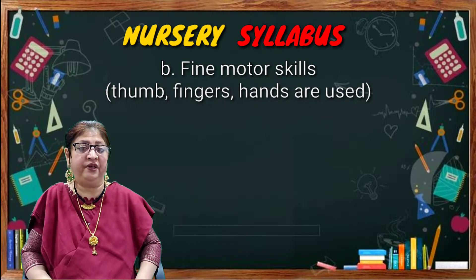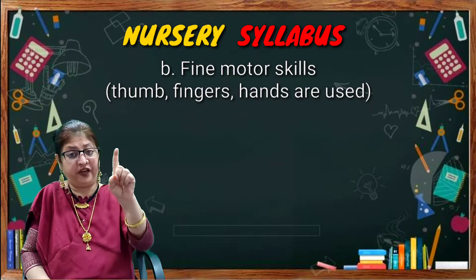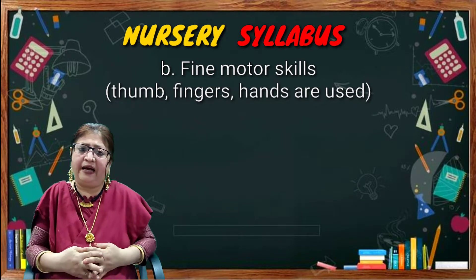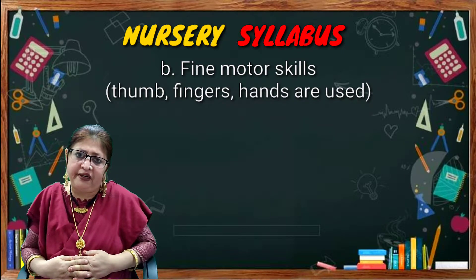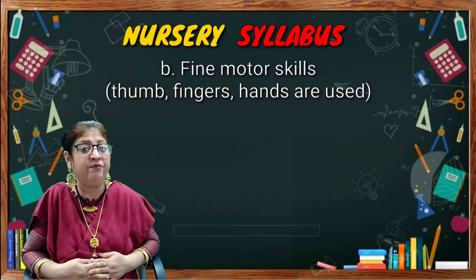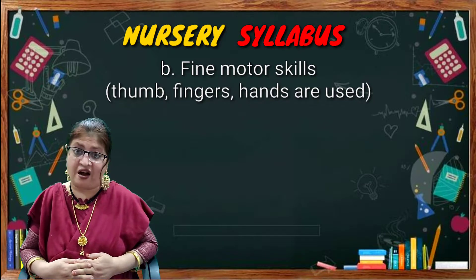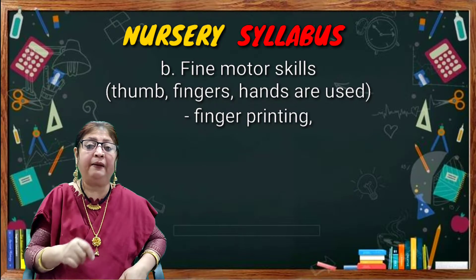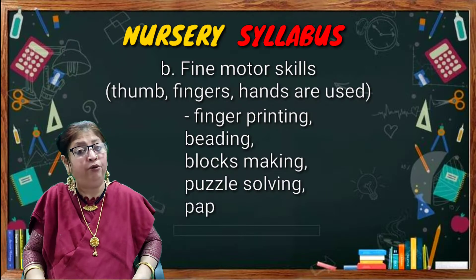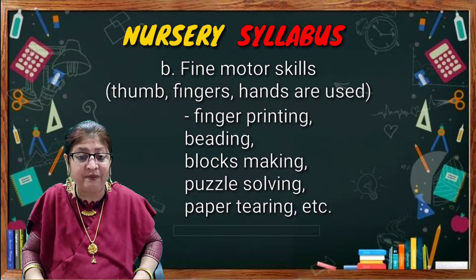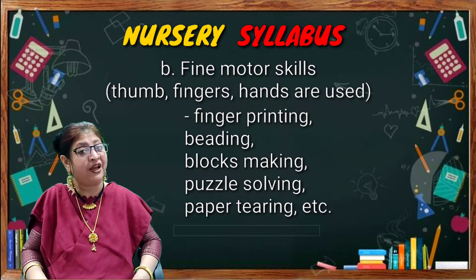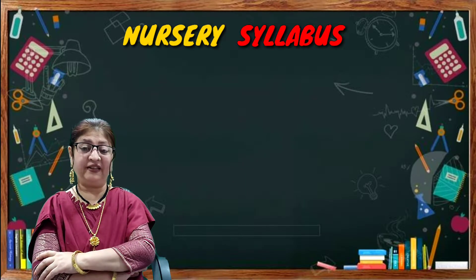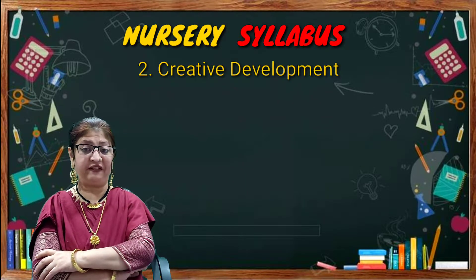Next comes fine motor skills. In fine motor skills, the fingers, thumb, and hands are used. The activities included under fine motor skills are finger printing, beading, block and puzzle making, and paper tearing.